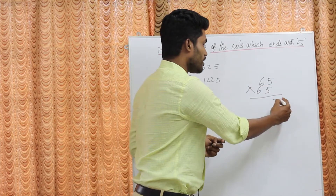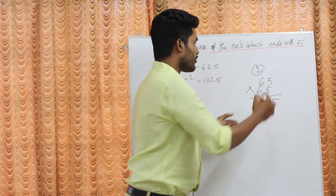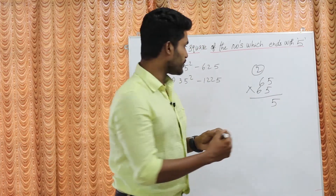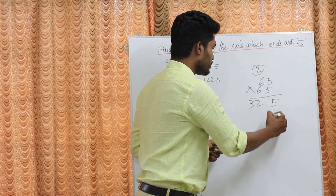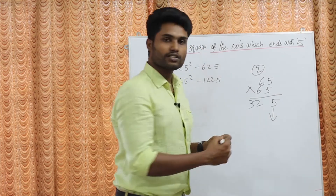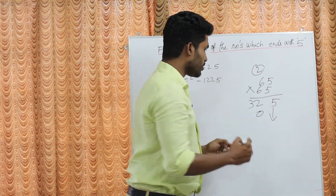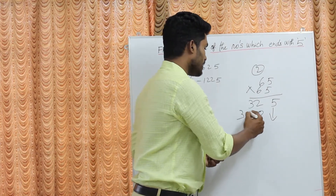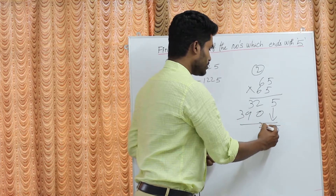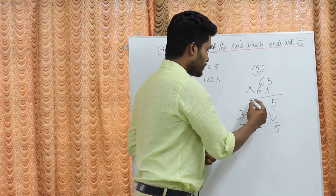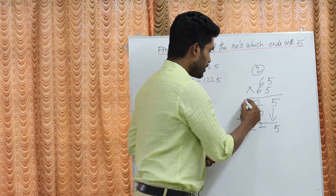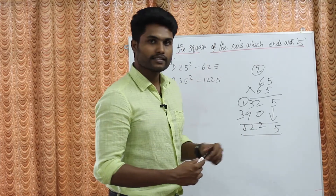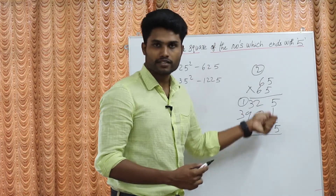For example, doing it the long way: 5 fives are 25, 5 sixes are 30, plus 2 carry gives 32. Then 6 into 5 is 30, carry 3, giving 39. Then 5, 12. Adding everything: the answer is 4, 2, 2, 5 — that is 4225. This is the time-consuming method.